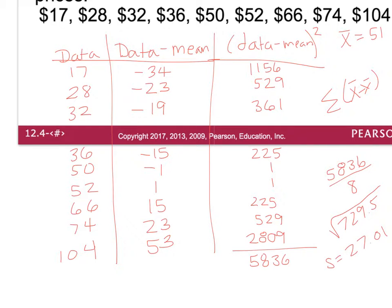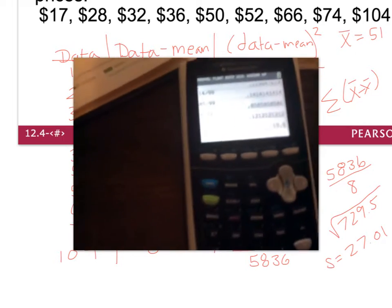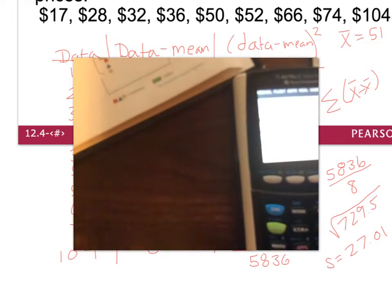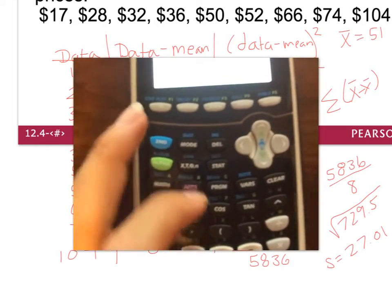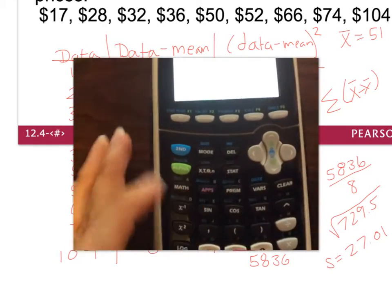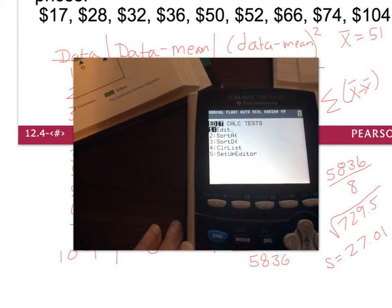Now I know what you want to know — can you do this in your calculator so you don't have to spend an hour making this table? Yes, you can. First, enter your data by hitting the STAT button, then select Edit, which is option 1. If your List 1 already has data, go up to List 1, hit Clear, and then Enter.